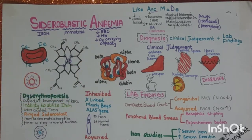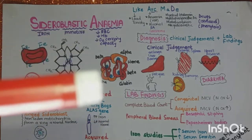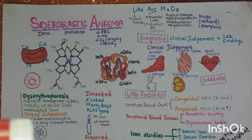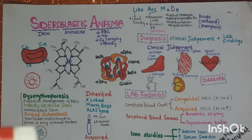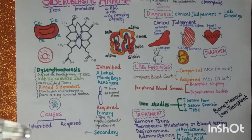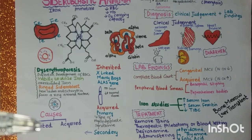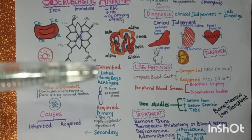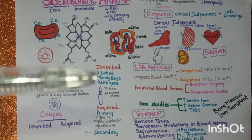The main features are dyserythropoiesis, inability to utilize iron, and ring sideroblasts. Ring sideroblasts are iron-laden mitochondria that form a ring around the nucleus. Sideroblastic anemia can be inherited or acquired. In the inherited form, it is X-linked and mainly affects boys.